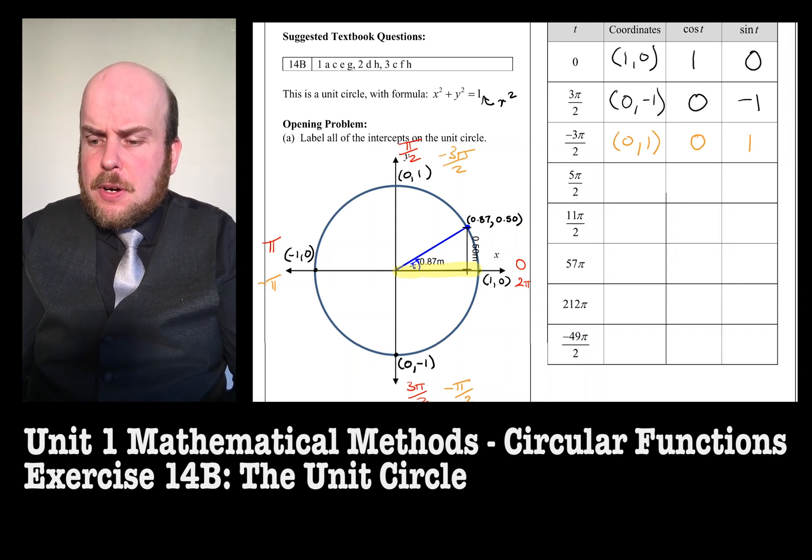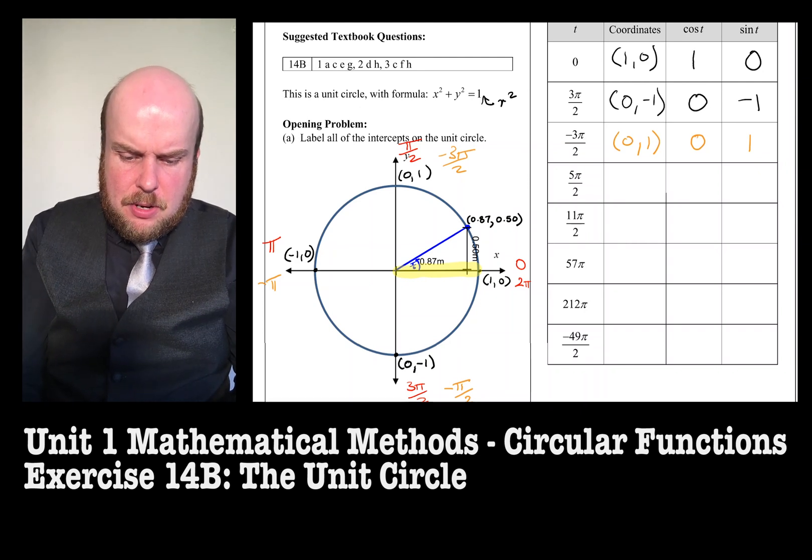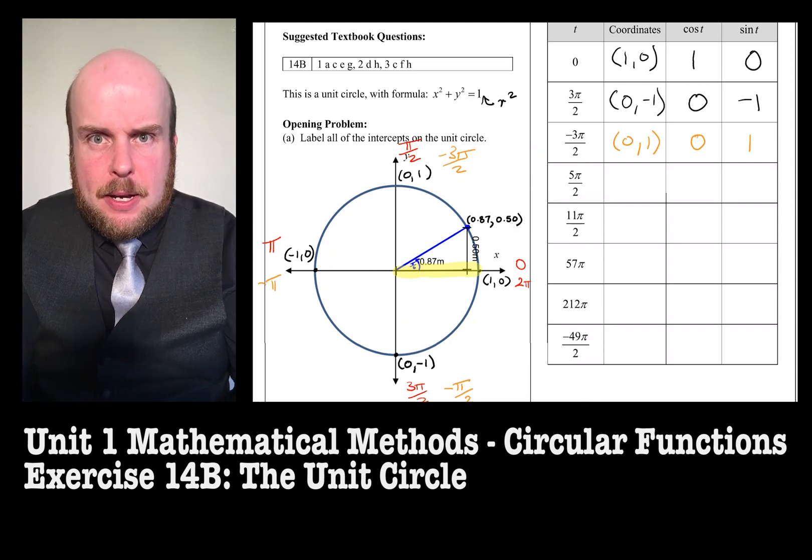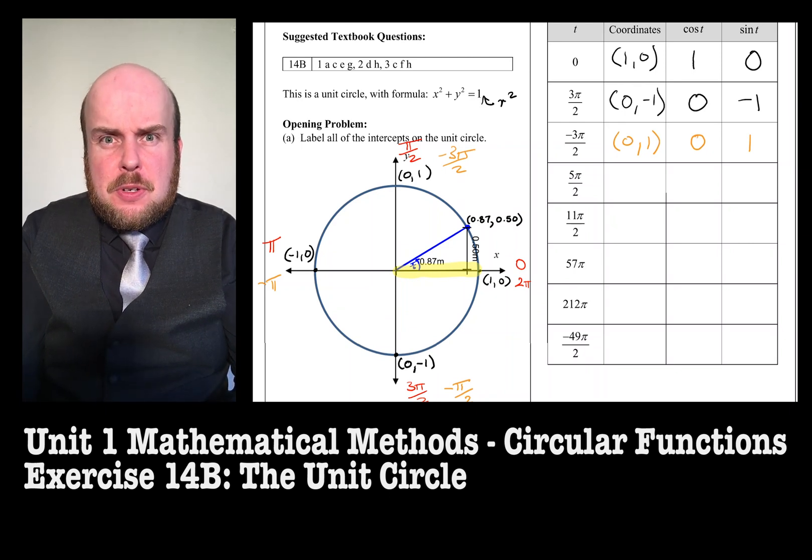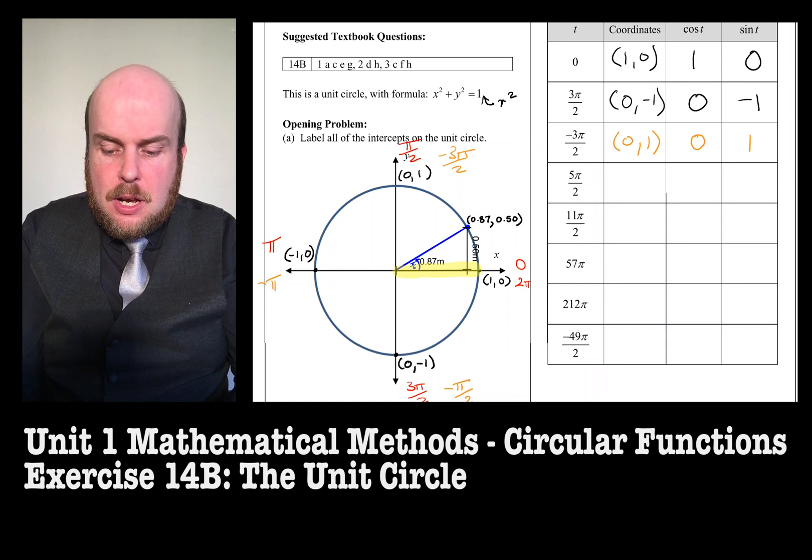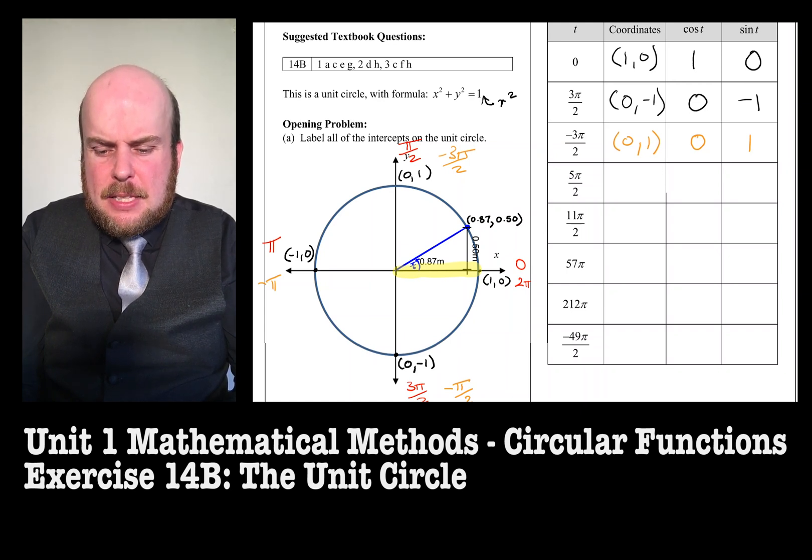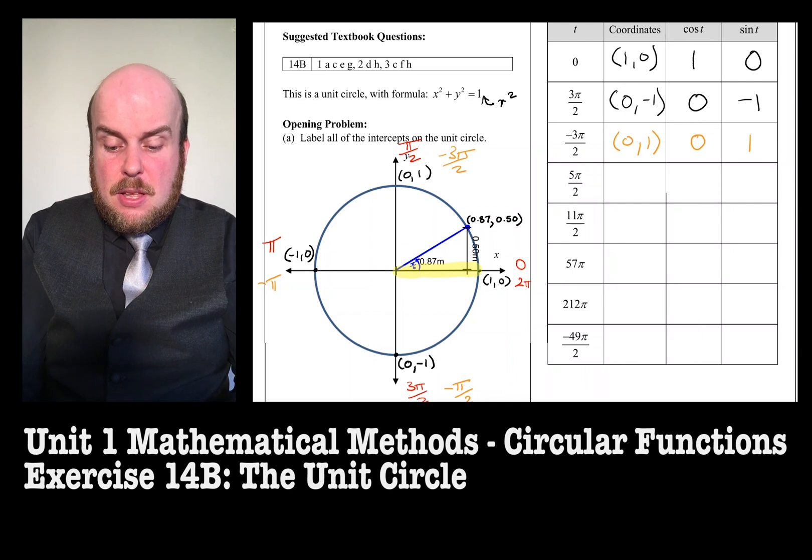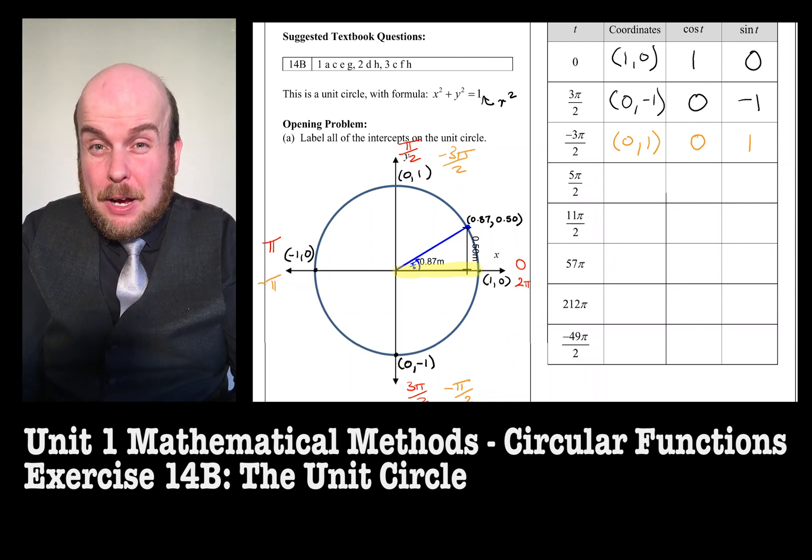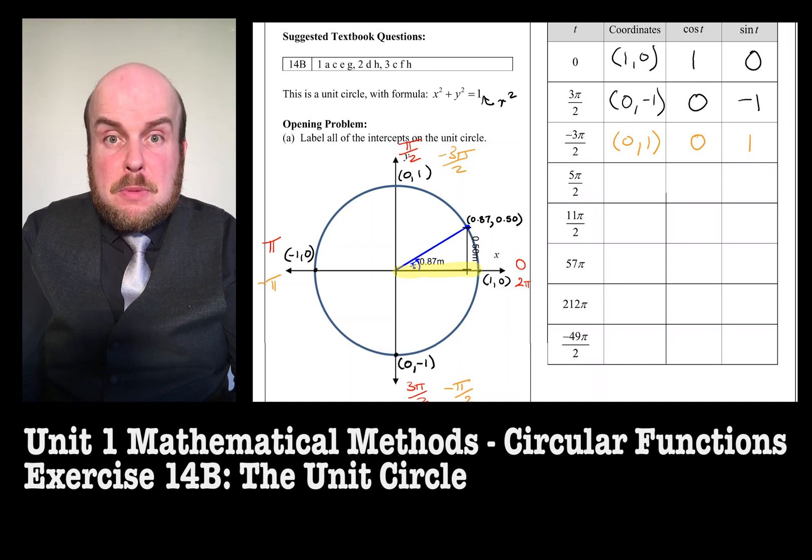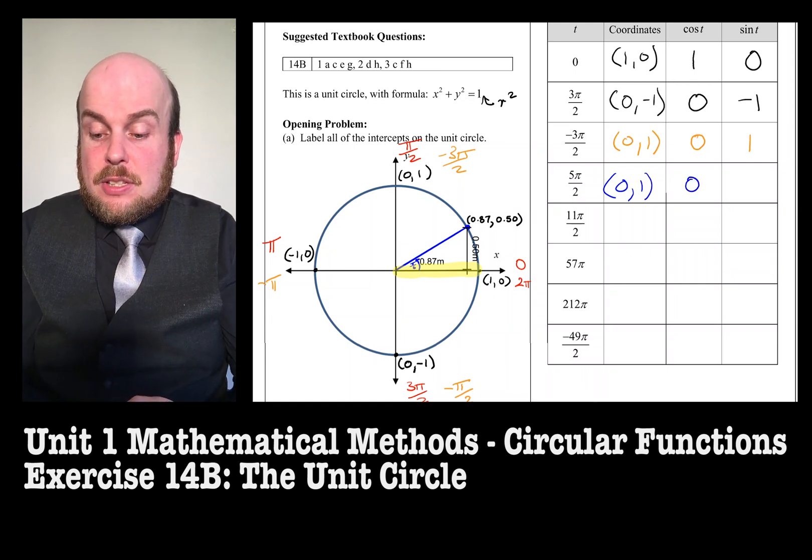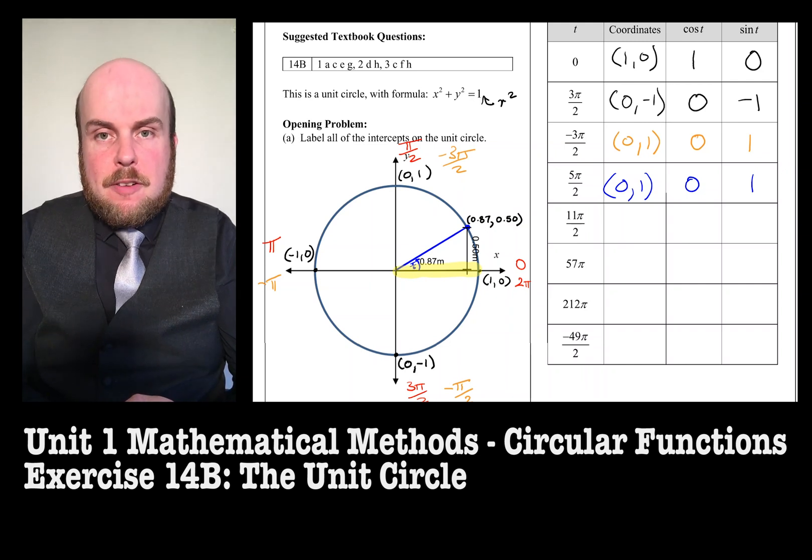5 pi on 2. So with 5 pi on 2, where on earth is that? Because we've got pi on 2, pi, 3 pi on 2, then back to 2 pi. There is no 5 pi on 2, unless 5 pi on 2 means I have to go around the circle again. So after 2 pi, what would come next if I went around the circle again? So 0, pi on 2, pi is the same as saying 2 pi on 2, 3 pi on 2. 2 pi is saying 4 pi on 2 would be the same as 2 pi. So therefore, this at the vertical axis here would be 5 pi on 2. So this would also be 0, 1. So therefore, this cos of 5 pi on 2 is 0, and the sine of 5 pi on 2 is 1.